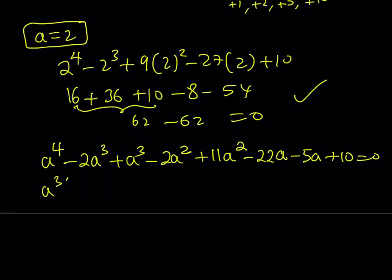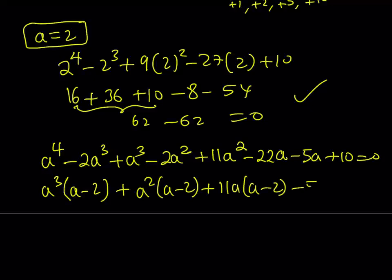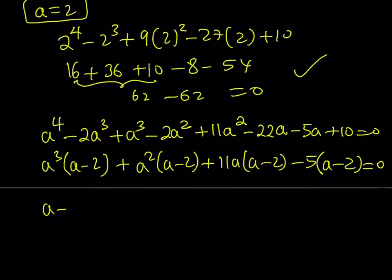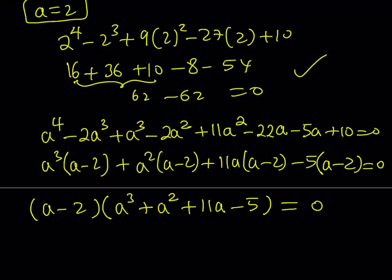Now here, if you take out a cubed, you get a minus 2. And then if you take out a squared, you get a minus 2. 11a times a minus 2. And finally, minus 5 times a minus 2 equals 0. So now we are able to factor this. a minus 2 obviously is a factor, because a equals 2 is a solution. And the rest is going to be a cubic. a cubed plus a squared plus 11a minus 5 equals 0.